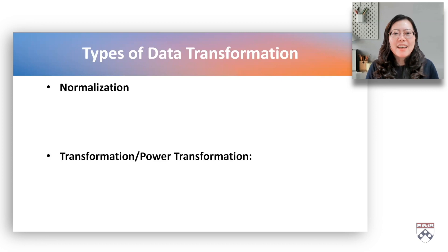There are two types of data transformation: normalization and transformation. Normalization includes min-max normalization, z-score normalization, and L2 normalization. Transformation, also called power transformation, includes log transformation, square root transformation, and box-cox transformation.